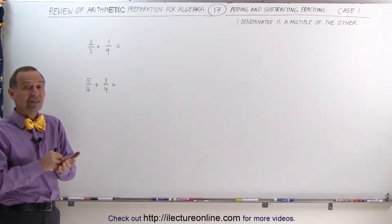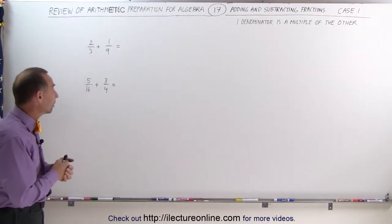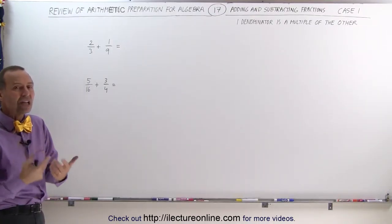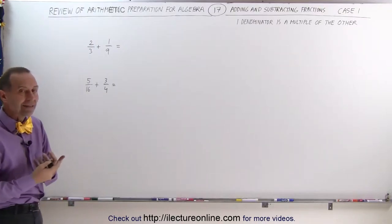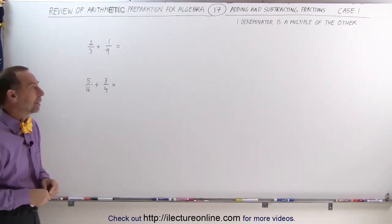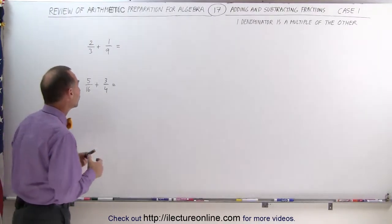If the smaller of the denominators fits evenly into the larger of the two denominators, we can then very easily change that. We can then find easily the lowest common denominator. How is that done? As follows.